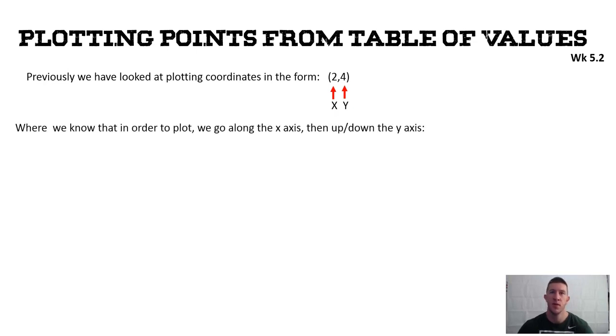We know that in order to plot this we would go along the x-axis and then up or down the y-axis depending on if it was positive or negative. In this case it would look like this where I've gone across to the 2 and I've gone up 4 and that is my coordinate right there.